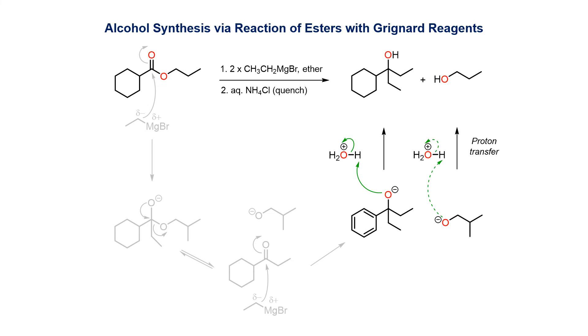Once the carbonyl groups have been consumed, there are now two types of alkoxide in solution, which are then quenched with acid to give the isolated alcohol products.